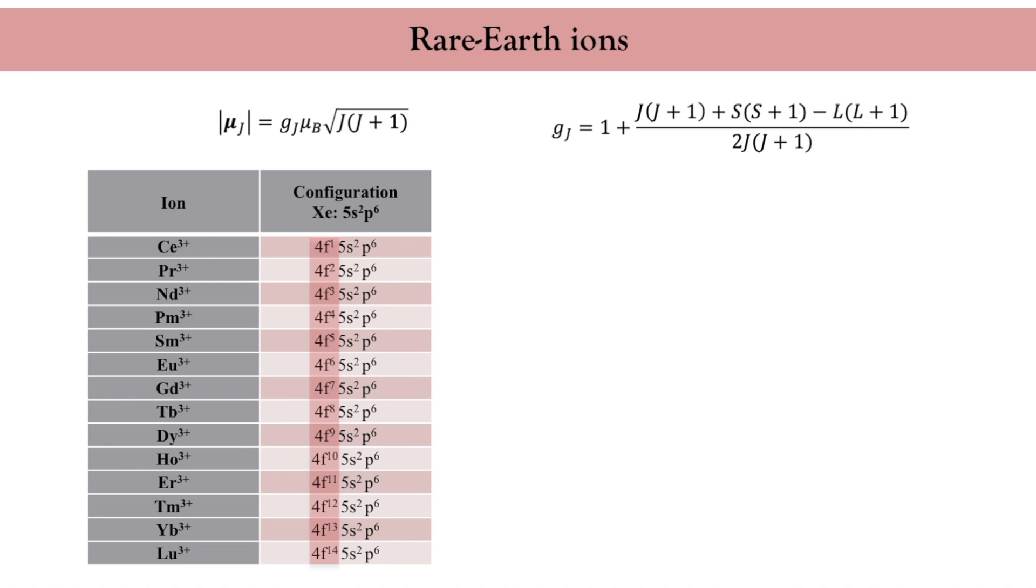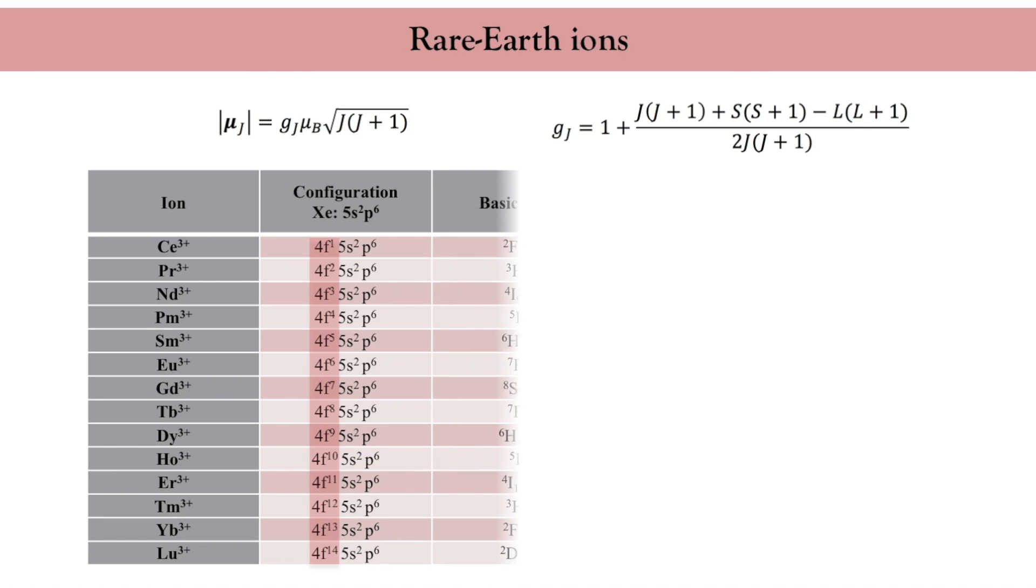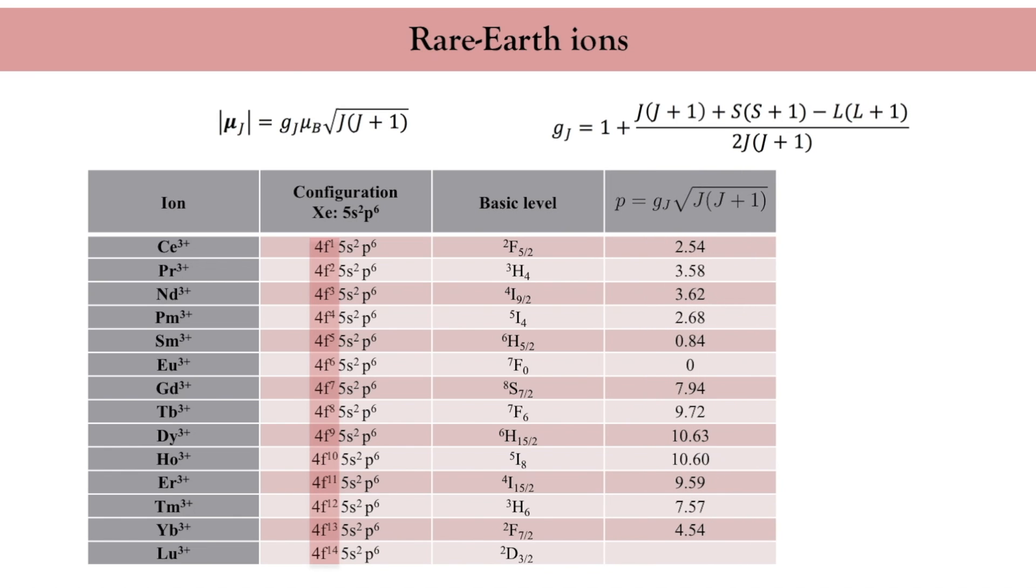Using Hund's rule, as discussed previously, the spectroscopic terms can be determined. Now, I can use the total angular momentum and compute the magnetic moments of each rare earth ion.